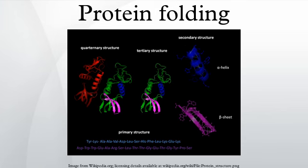The duration of the folding process varies dramatically depending on the protein of interest. When studied outside the cell, the slowest folding proteins require many minutes or hours to fold, primarily due to proline isomerization, and must pass through a number of intermediate states, like checkpoints, before the process is complete. Very small single-domain proteins with lengths of up to 100 amino acids typically fold in a single step. Timescales of milliseconds are the norm, and the very fastest known protein folding reactions are complete within a few microseconds.